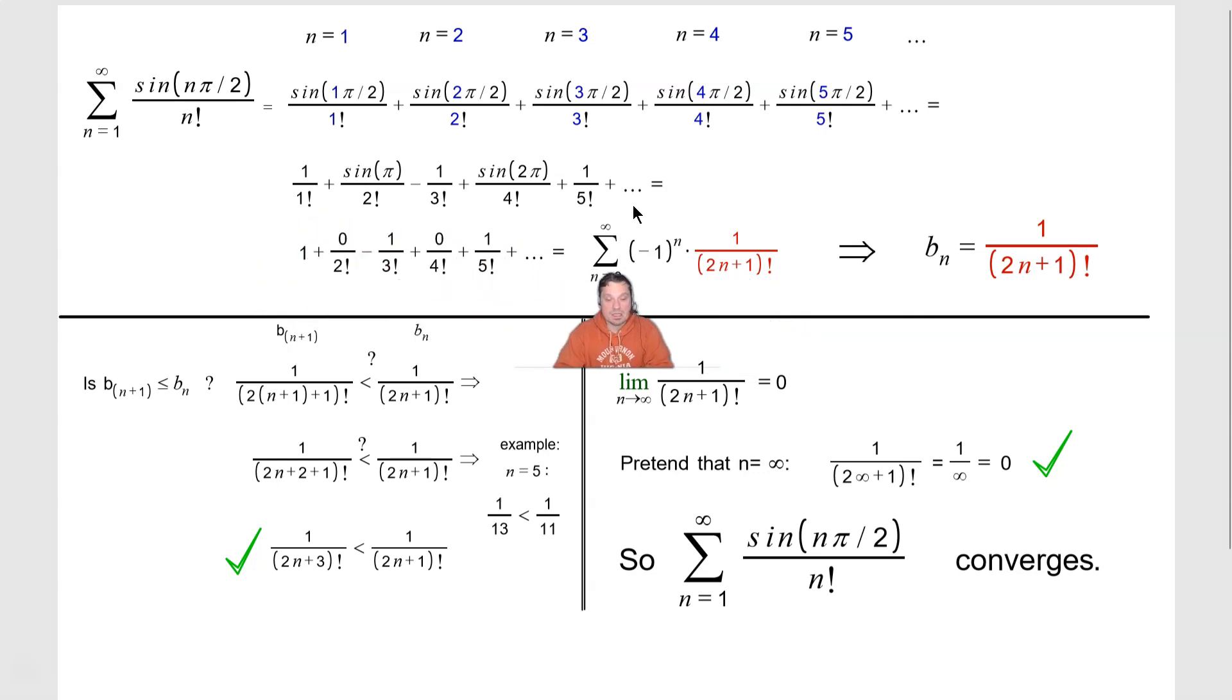So it's going to begin at 0, go up to positive infinity. You need the negative 1 to the n to change the sign on terms. And this expression is 1 over 2n plus 1 factorial, because 2n plus 1 is the general way of writing an odd number, like for example over here 1 or 3 and 5, since those are the terms that remain.